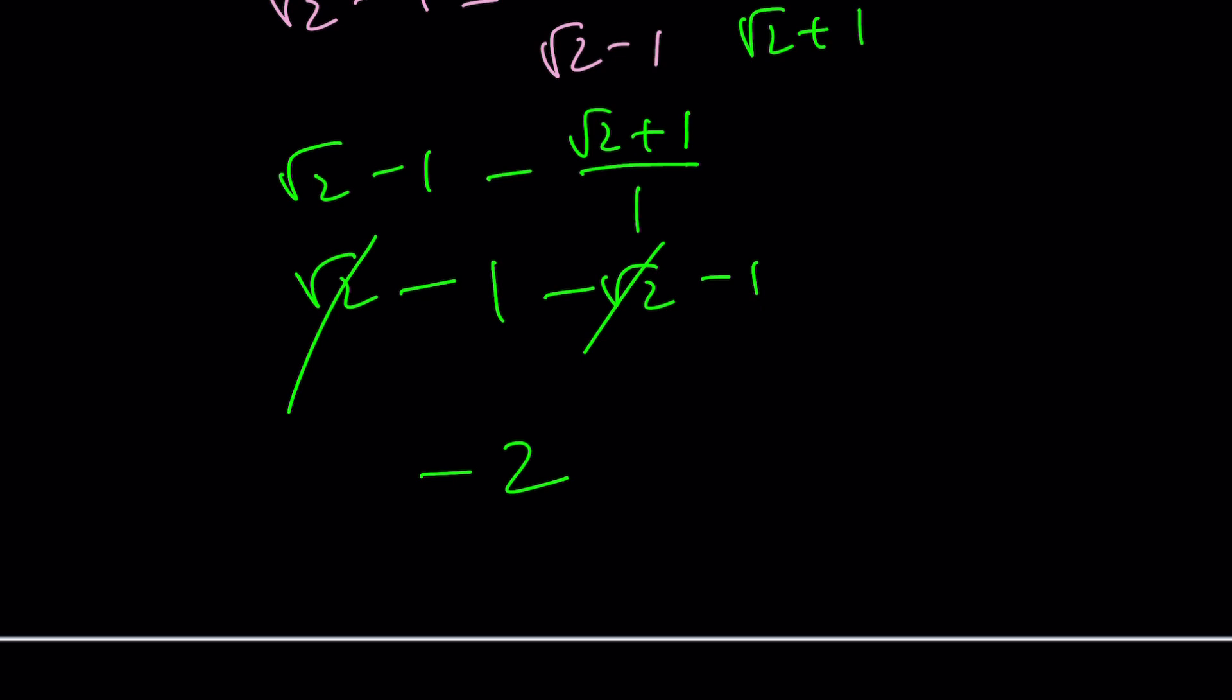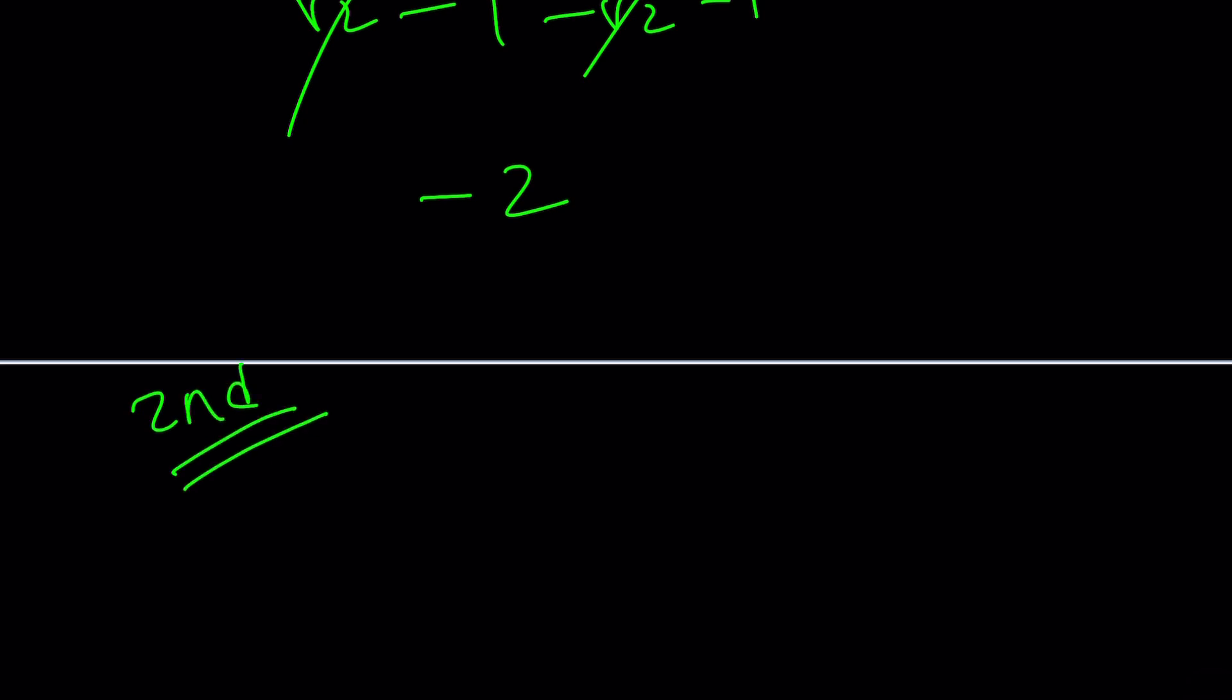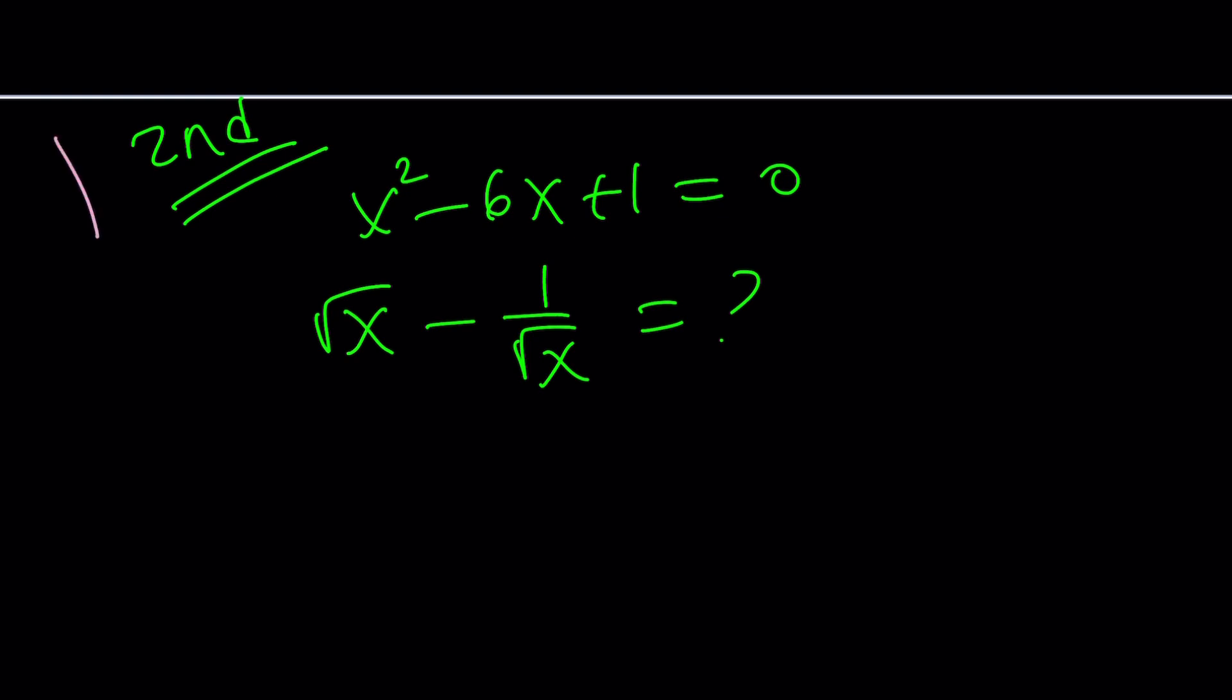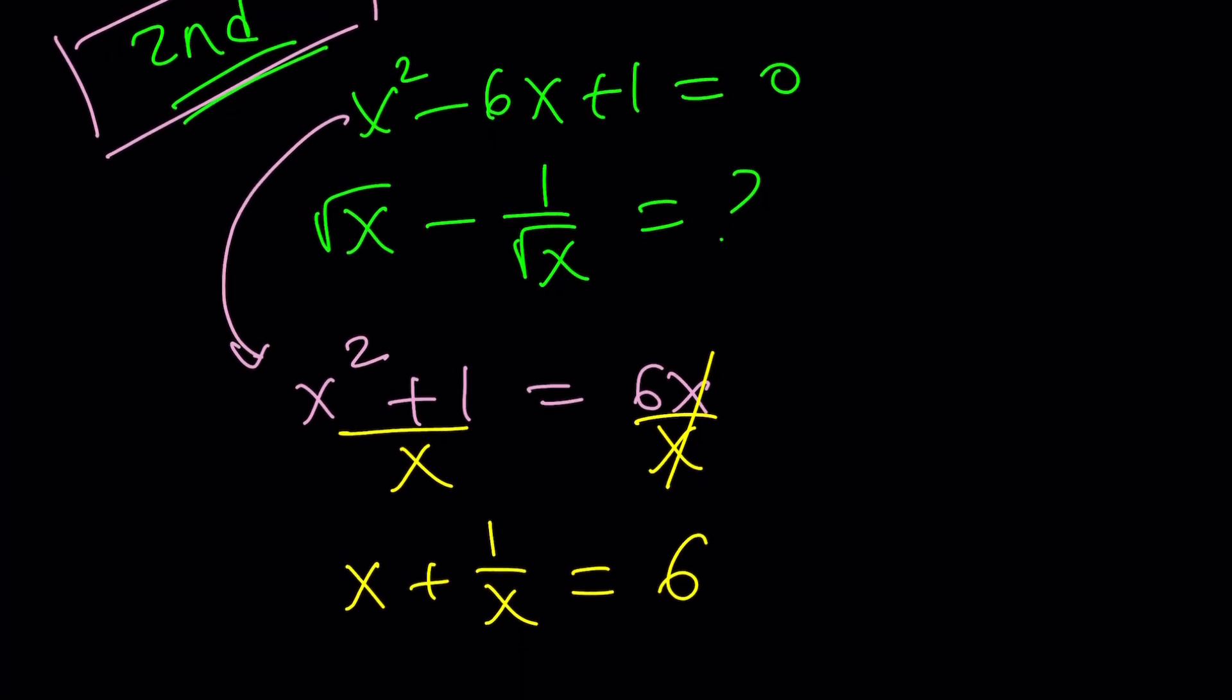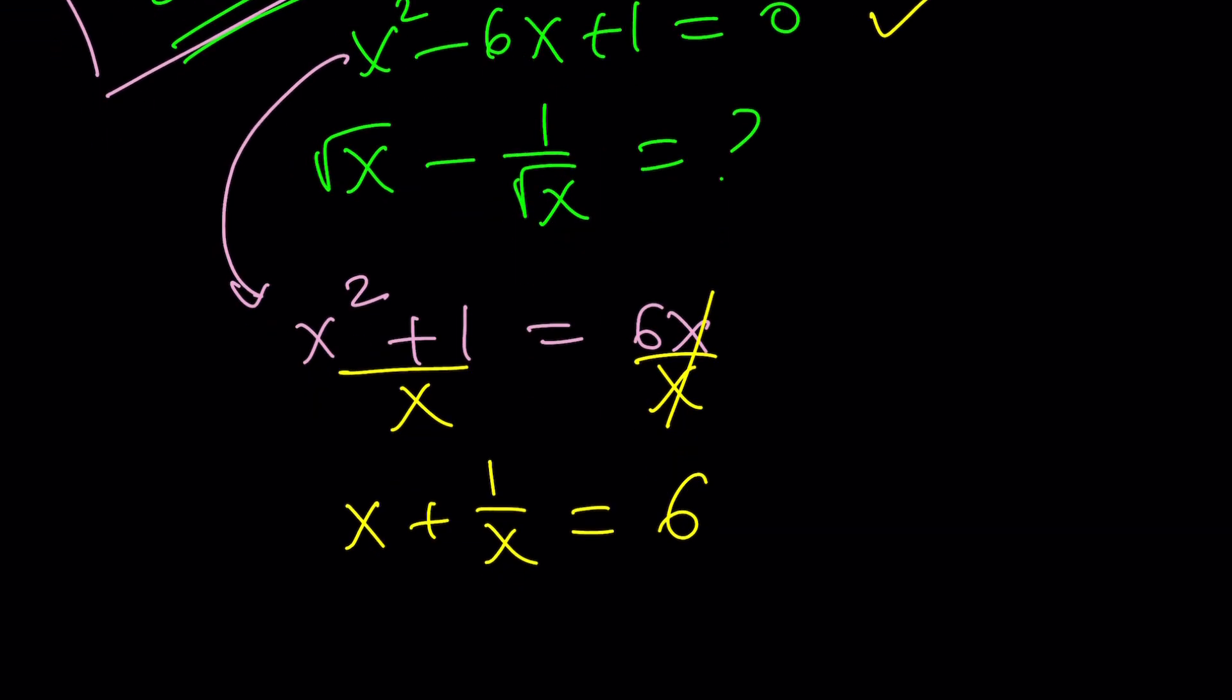Let's take a look at the second method because second method can give us more insight into the process. What was the problem again? x squared minus 6x plus 1 equals 0, and we're supposed to evaluate root x minus 1 over root x. So the second method is actually pretty cool, and here's how it works. I'm going to isolate the 6x here because my goal is to divide both sides by x and to get a numerical value for x plus 1 over x, which is 6. Of course, x cannot be 0. We already know that, because if x is 0, it's not going to satisfy this equation.